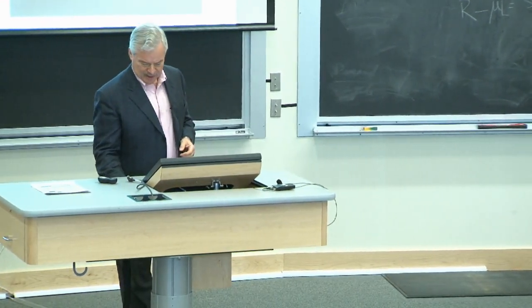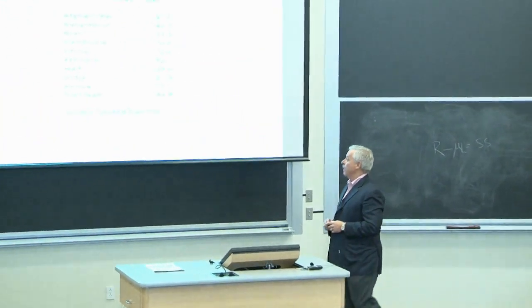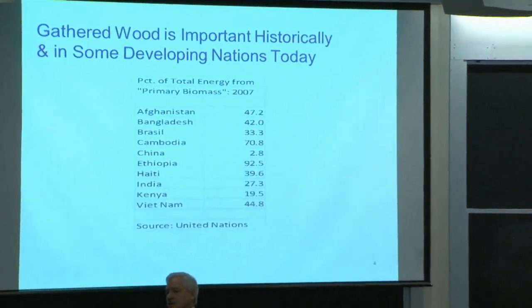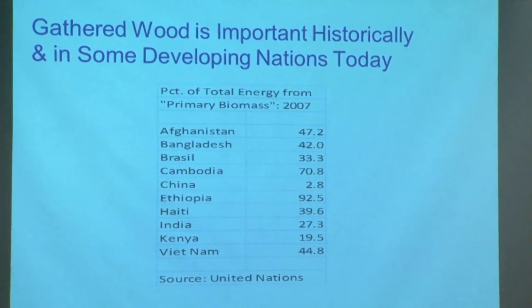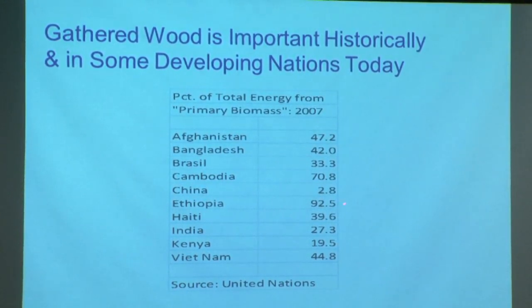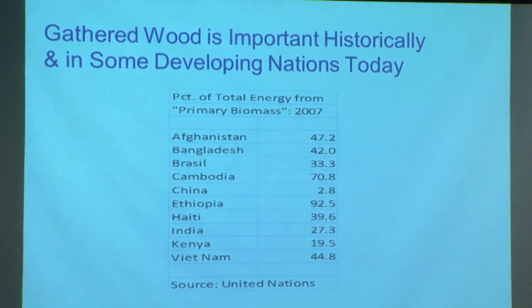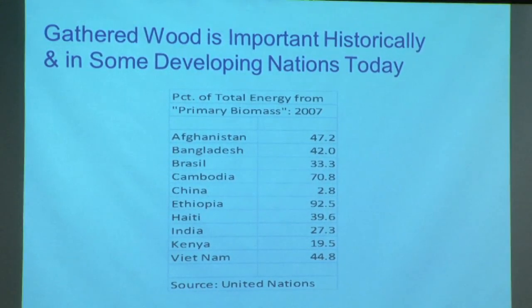They do burn coal, and we're going to see a fair amount of that. But this is UN data on the fraction of total energy from primary biomass — largely wood and brush. You'll notice how high it is in a number of poor countries. Look at Ethiopia: almost all the energy available — and these are estimates — is the dominant energy source in those very poor countries: gathering wood and burning it to cook. Most of the energy data you see does not include that, in part because the best you can do is estimate it. Historically, this is very important as an energy source, and it's still important in many developing countries.